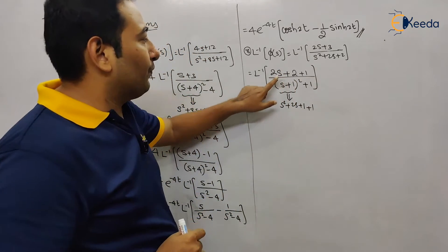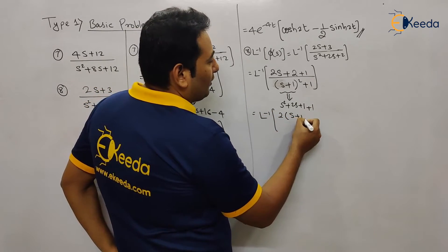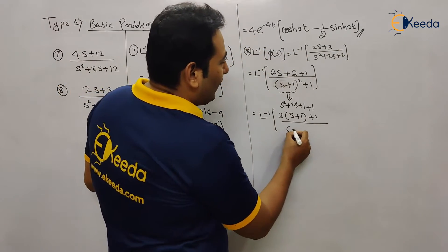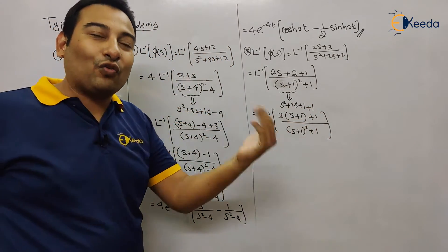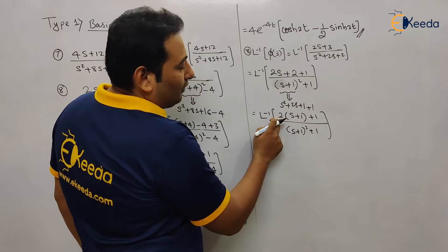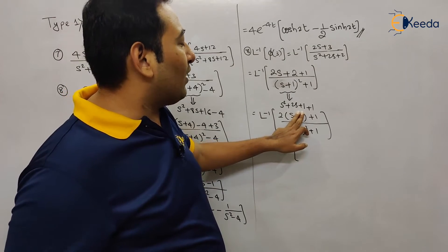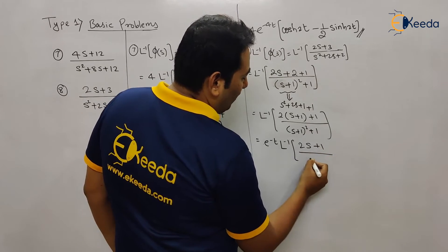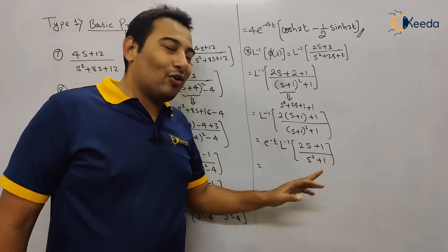From the two terms we take two common, so it becomes s plus one plus one, upon s plus one the whole square plus one. Do you see shifting in this problem? Yes — s is shifted by plus one. So outside we have e raised to minus t, times inverse Laplace — forget about the shifting and write whatever you see. You will see 2s plus one upon s squared plus one. Separate this: s upon s squared plus one, and one upon s squared plus one.